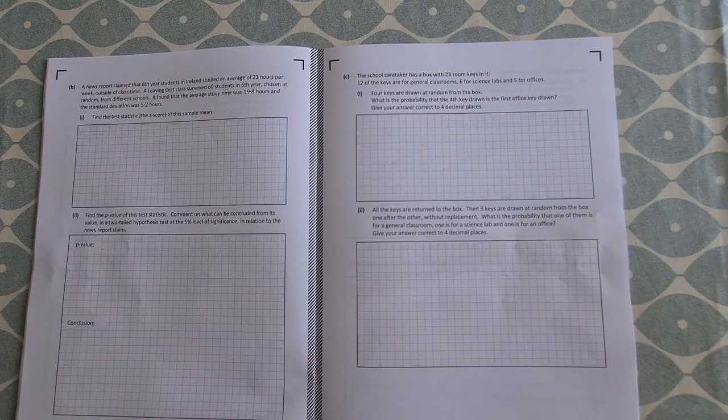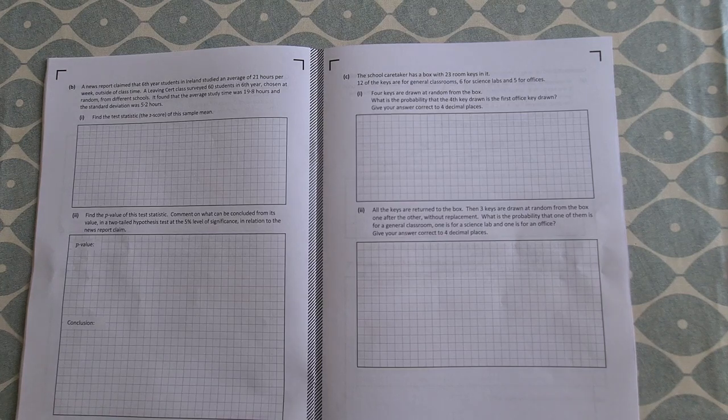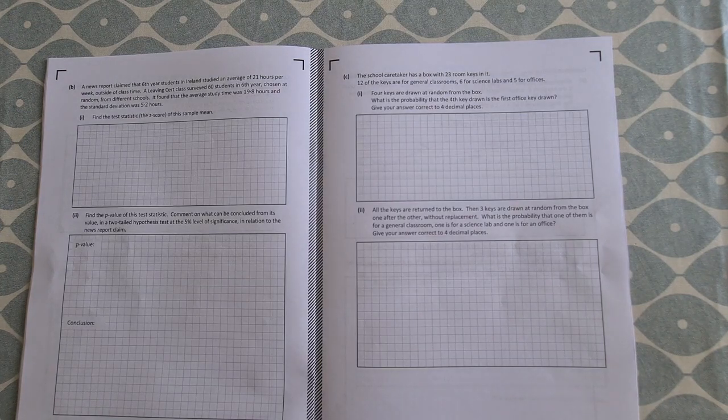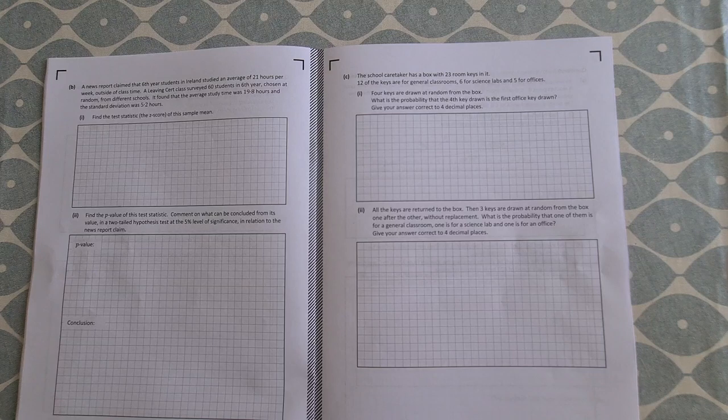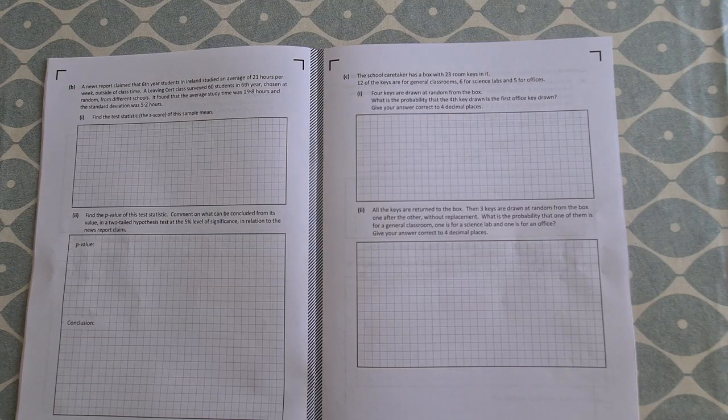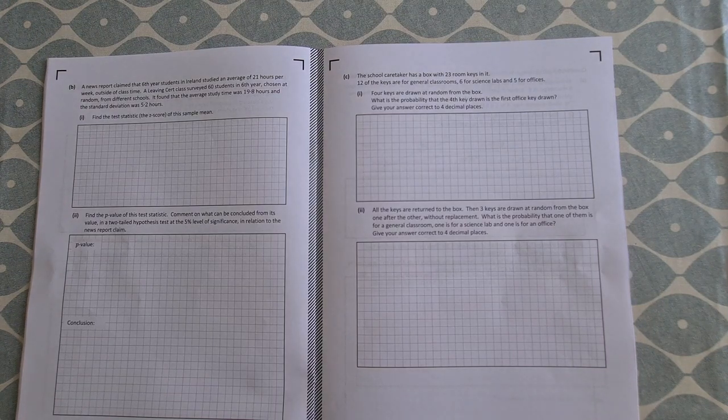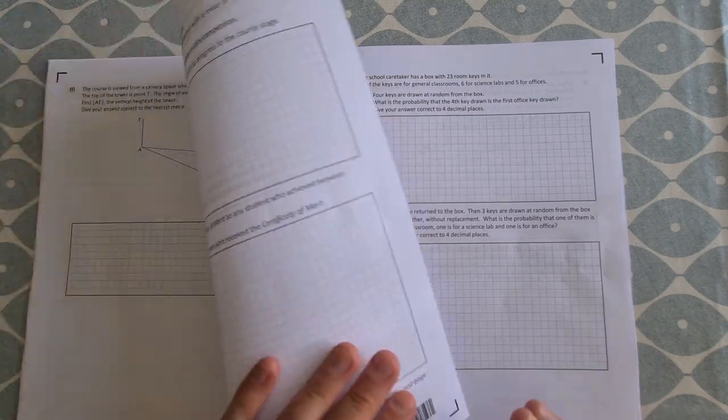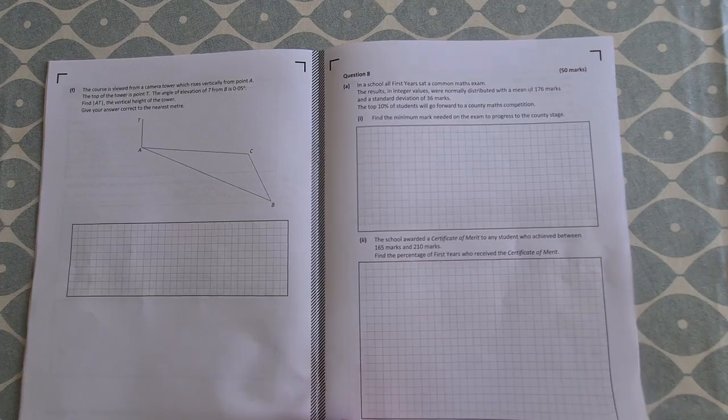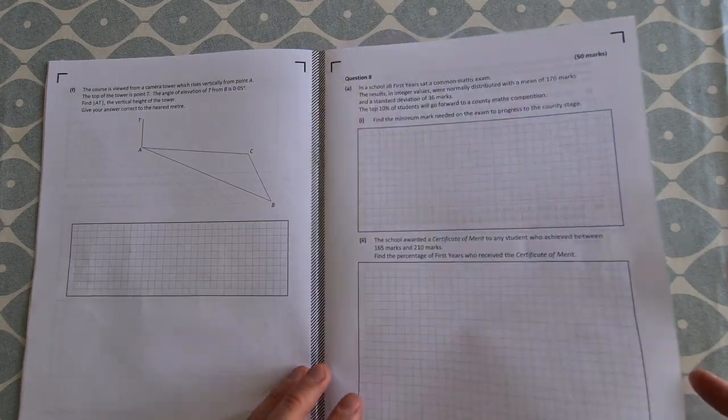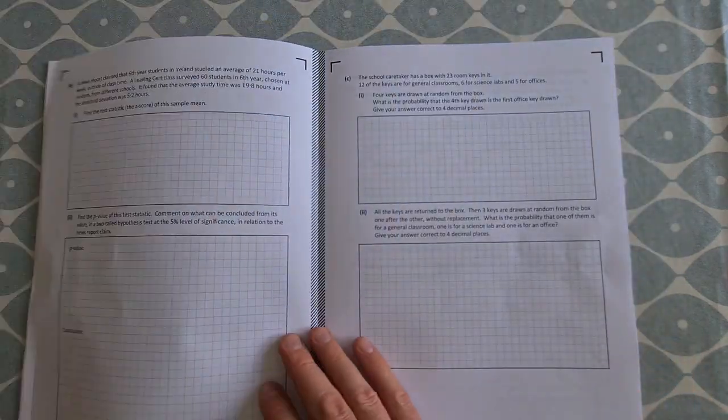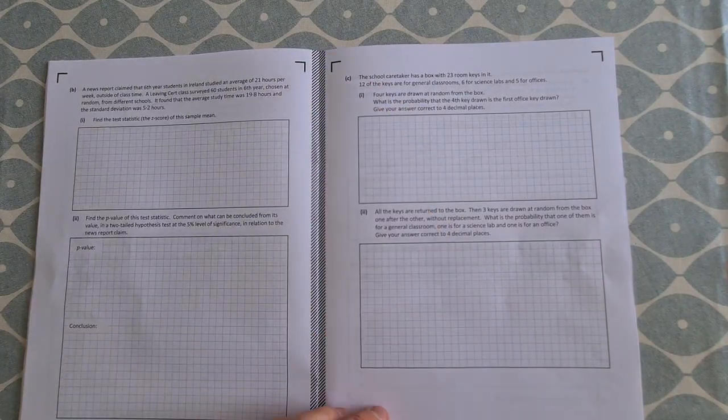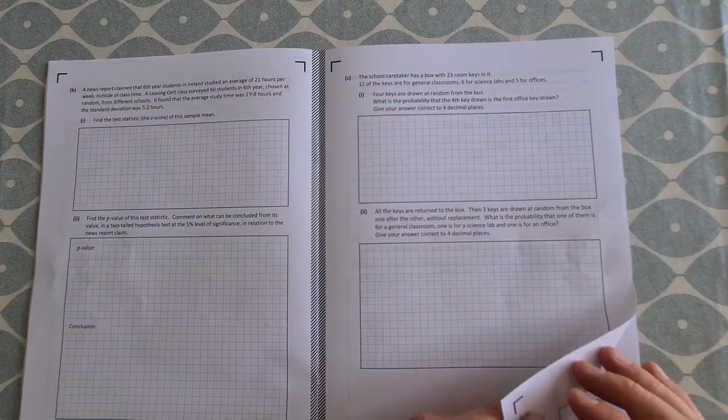Caretaker has a box with 23 room keys in it: 12 of the keys are for general classrooms, 6 for science labs, and 5 for offices. 4 keys are drawn at random. What's the probability? So a bit more probability in here then as well, just with this statistics. And I've always said this: the statistics and the probability, they always come together. So you need to know both of them together in order to be able to do the long questions for them.